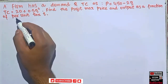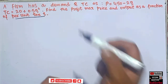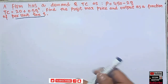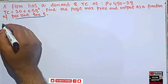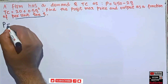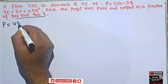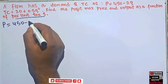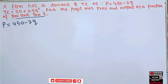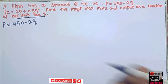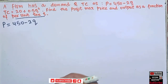So we have to find the price and output as a function of per unit tax — this is our new variable. First, we write our price function: p = 450 minus 2q. This is what we call the inverse demand function.